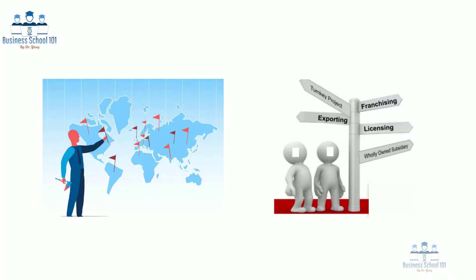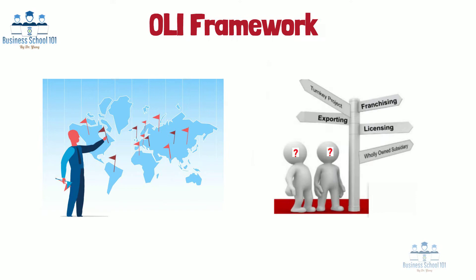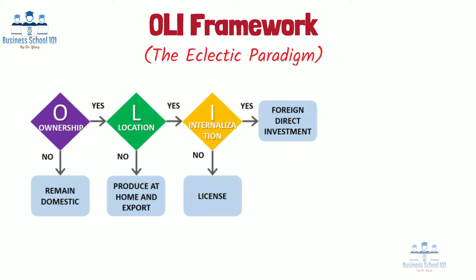So how to choose an appropriate entry strategy? For managers, one of the most practical approaches to help them at least exclude some options is by using the OLI framework, also known as the eclectic paradigm. OLI is an acronym for ownership, location, and internalization advantage. It is based on internalization theory and was first expounded upon in 1979 by the British economist John H. Dunning.